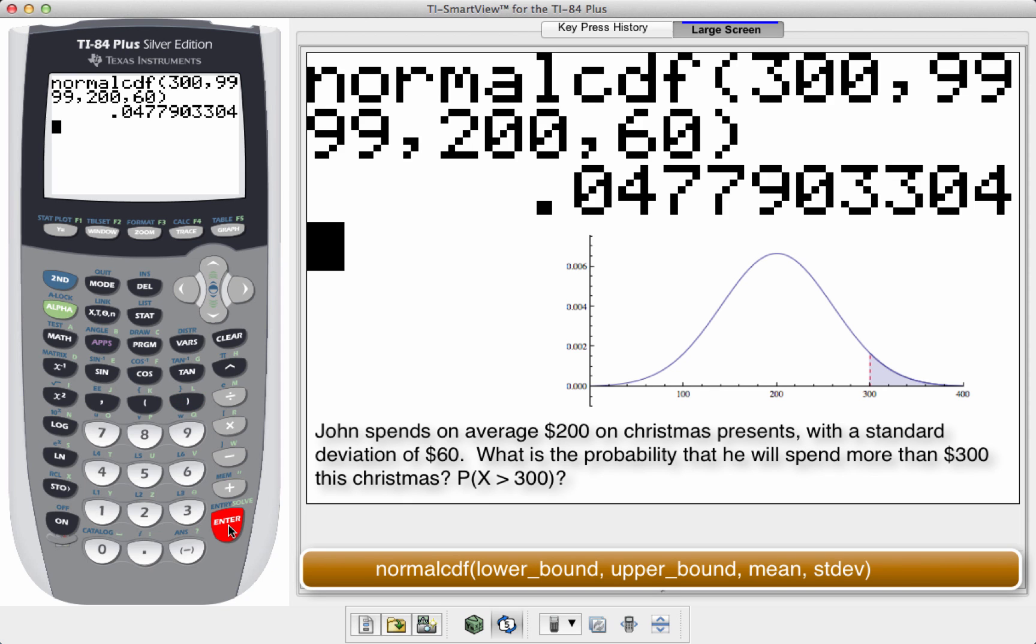So the probability that I spend more than $300 on Christmas if my mean is $200 with a standard deviation of $60 is about 4.78%. And that's how you do normal CDF, both with standardized scores and without standardized scores.